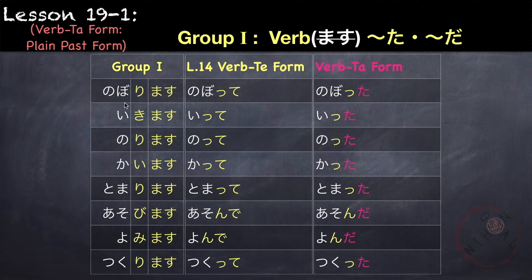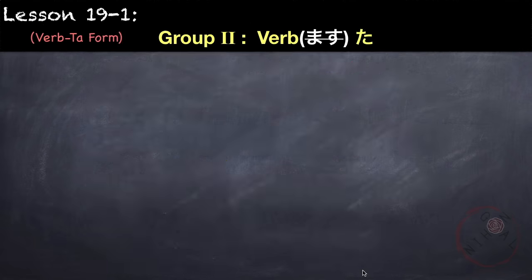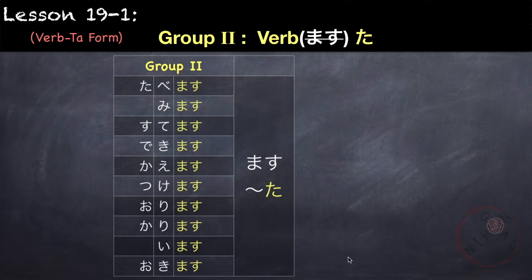For example: noborimasu is nobotta, ikimasu is itta, norimasu is notta, kaimasu is katta, tomarimasu is tomatta, asobimasu is asonda. So here, de becomes da. Yomimasu becomes yonda. Tsukurimasu becomes tsukutta. As for verbs in group 2, all you have to do is change masu to ta.